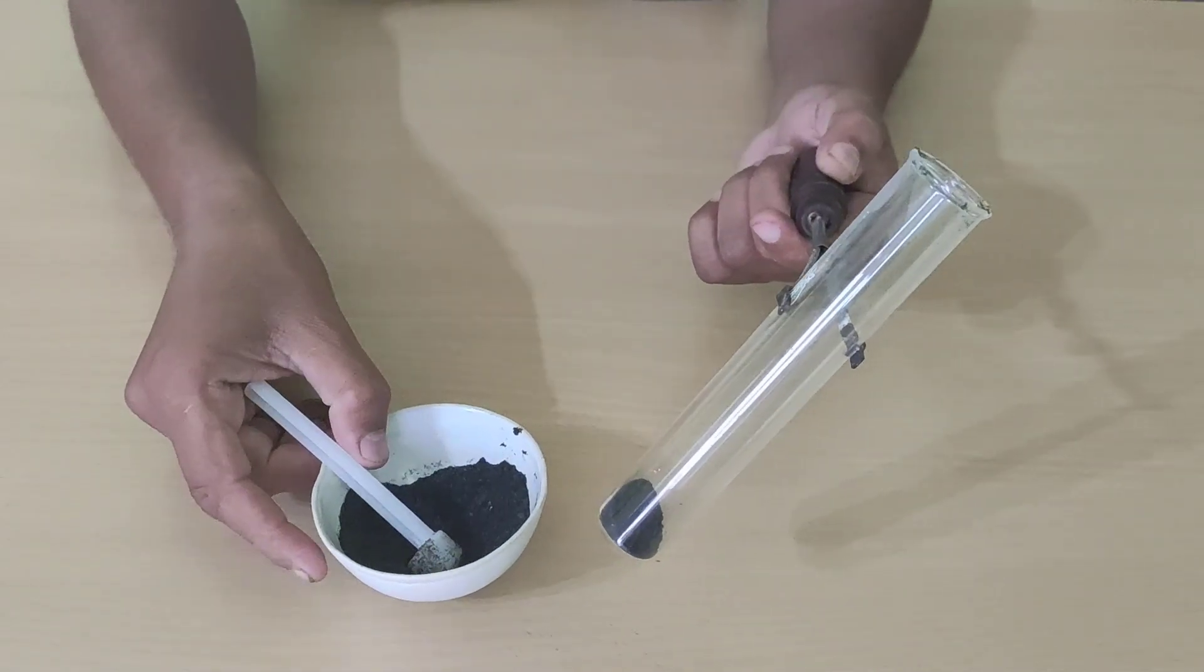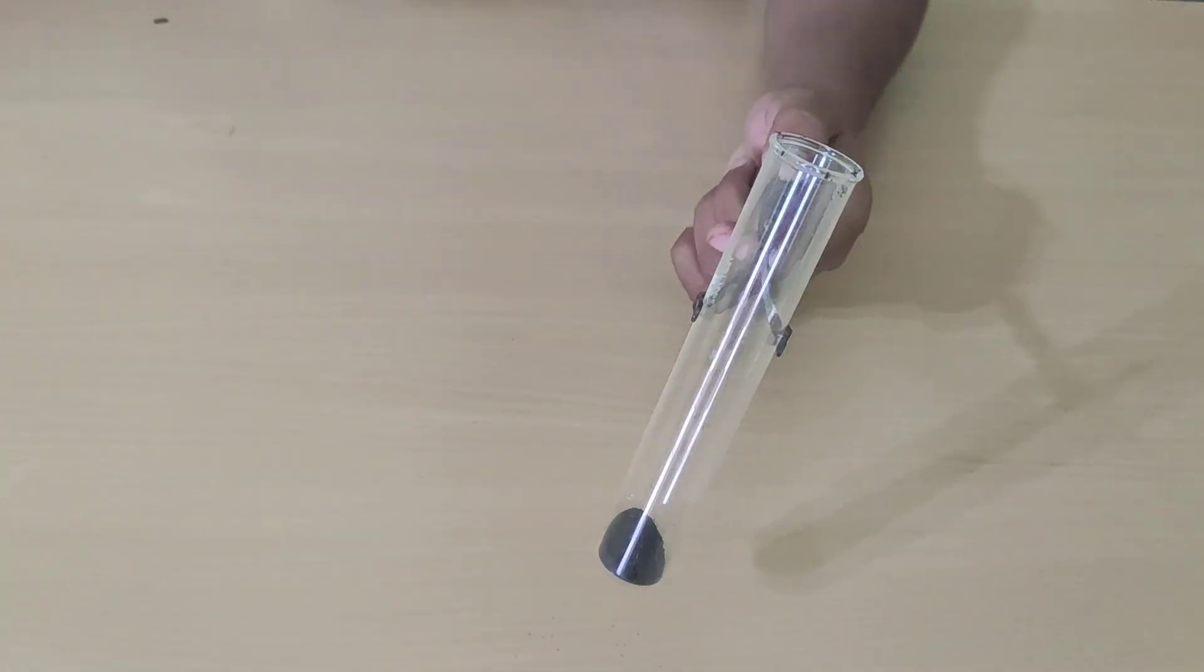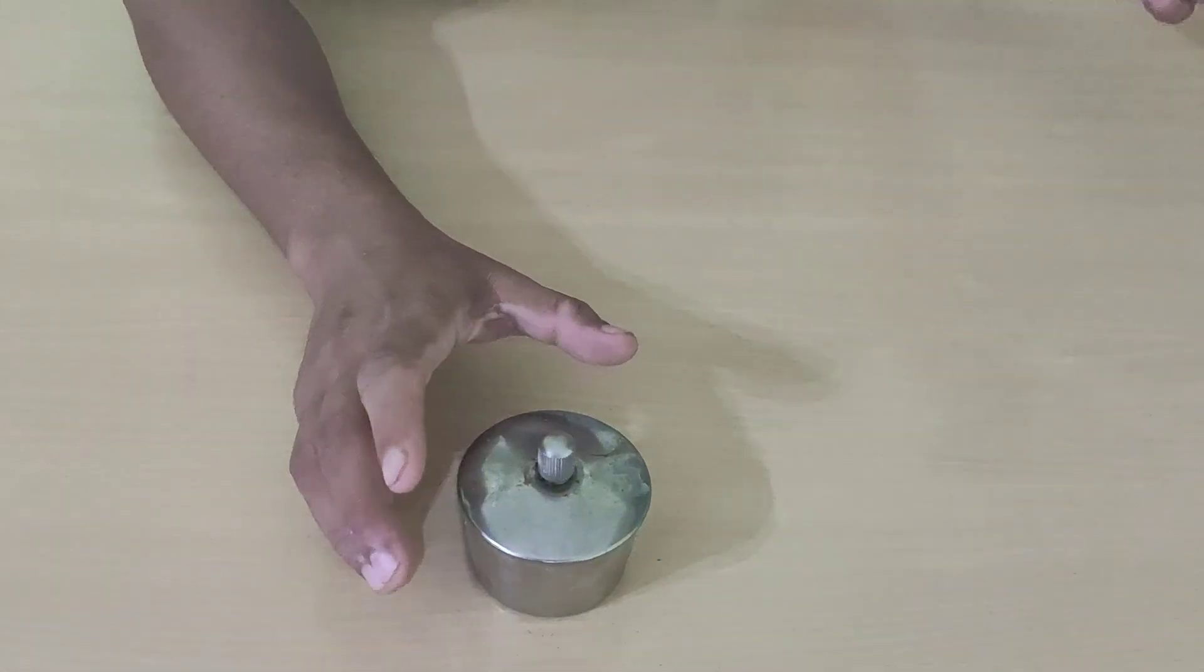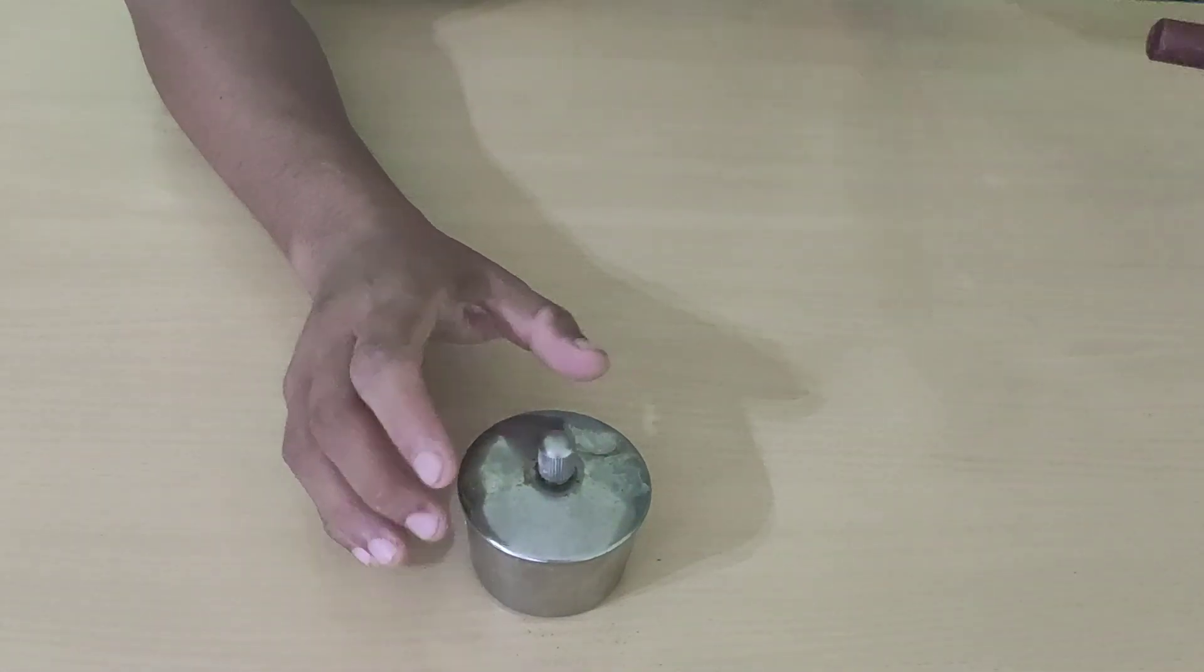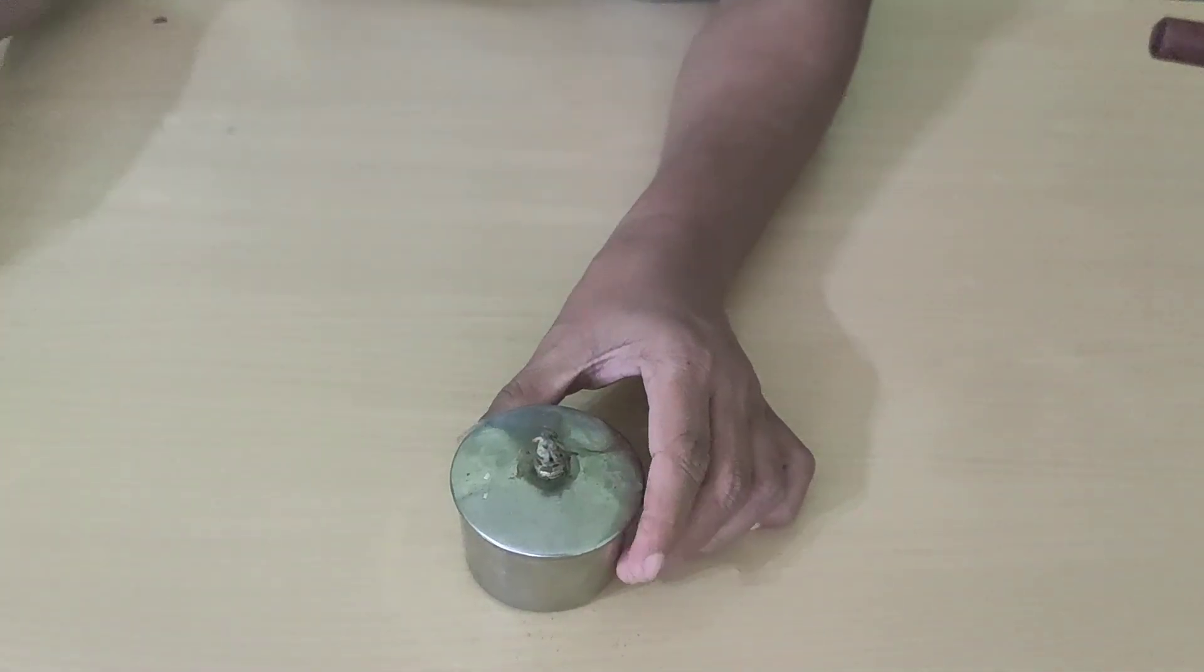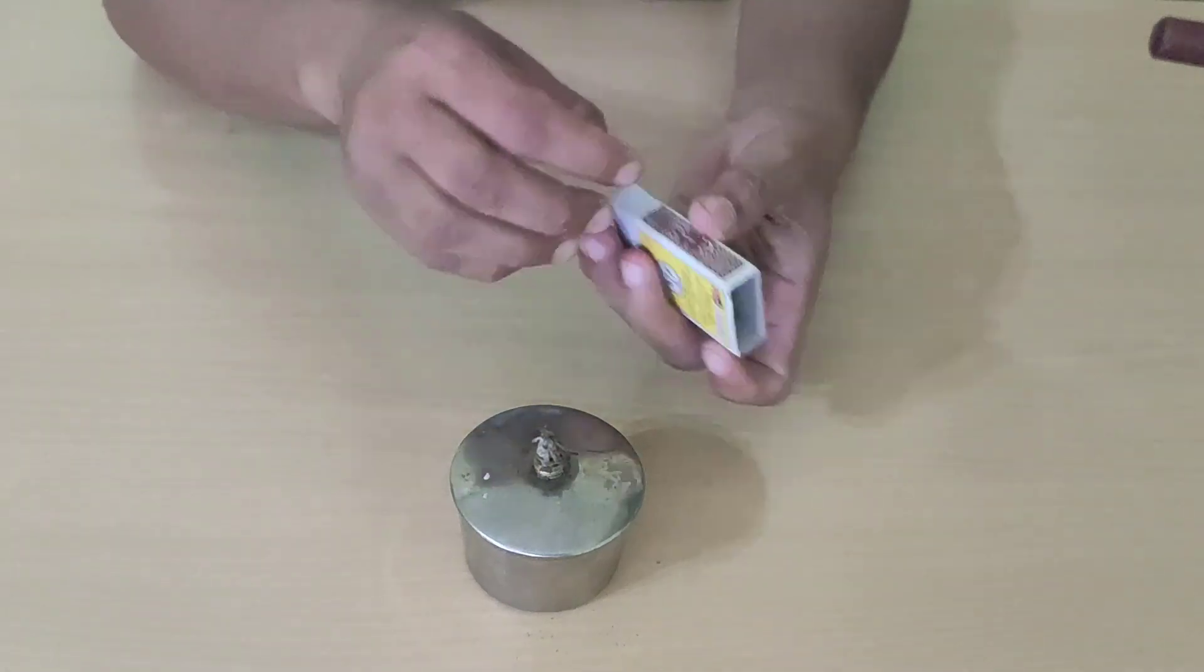Now, we will heat this potassium permanganate powder on a spirit lamp. You may either take a candle also. I have taken a spirit lamp for heating this test tube.